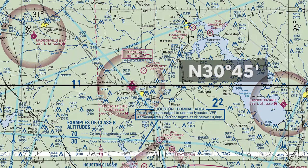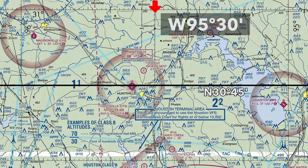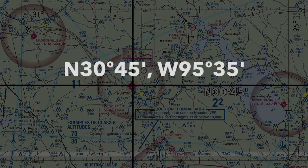Pause if needed to let it sink in. The closest line of longitude is 95 degrees 30 minutes. Longitude values increase moving left or west, so counting out five tick marks to the line of longitude that crosses the airport gives us 95 degrees 35 minutes west. The coordinates for the Huntsville Airport are 30 degrees 45 minutes north and 95 degrees 35 minutes west.